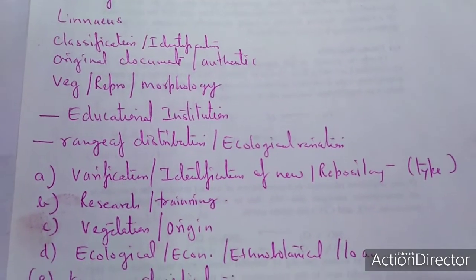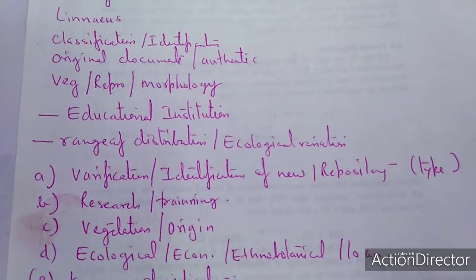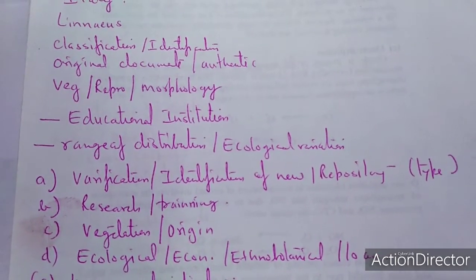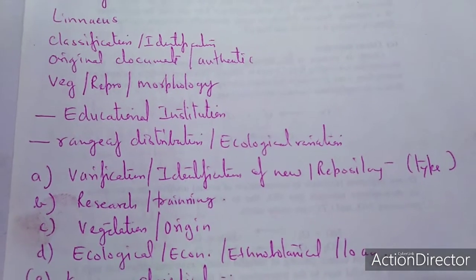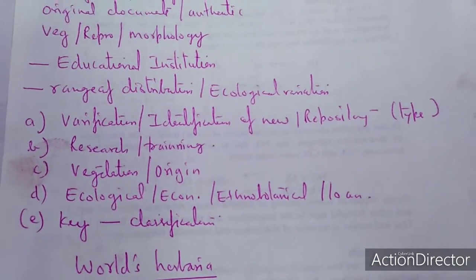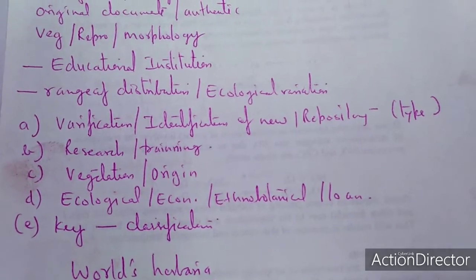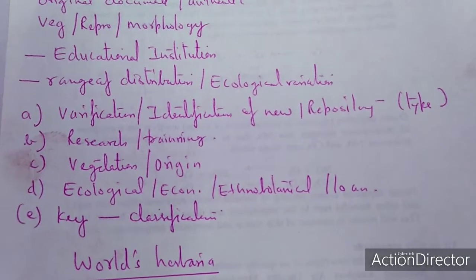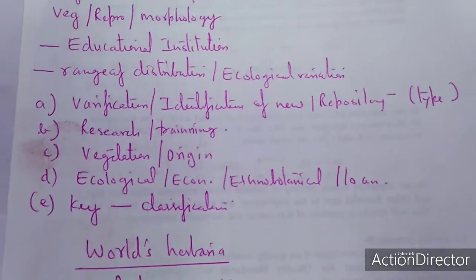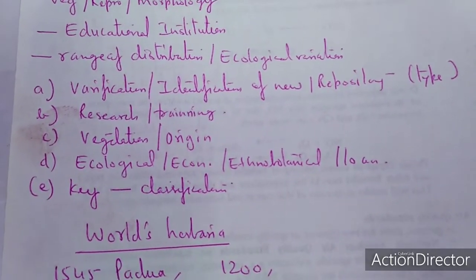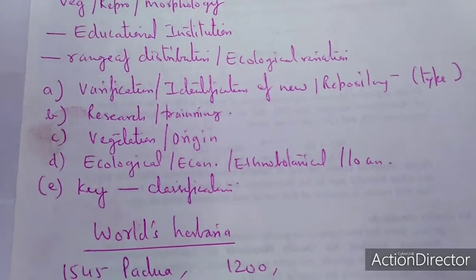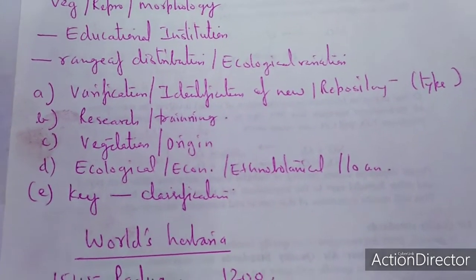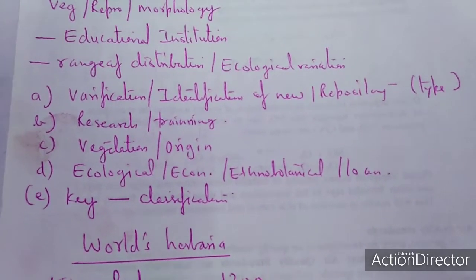Herbarium is a must for educational institutions. Ecological variation, ecological limitations, and range of distribution cannot be defined without the herbarium. Herbarium is technically needed for verification, identification of new repositories, and it defines the types — there are seven types discussed in the ICBN. The type is technically a herbarium sheet. Research cannot be done without the herbarium in any branch connected with plants. Even training cannot proceed without the herbarium.